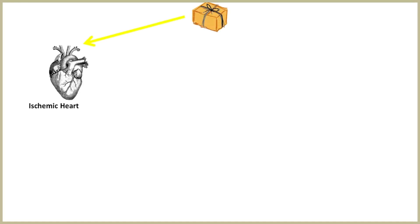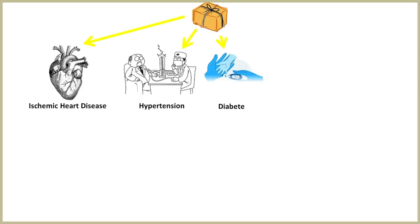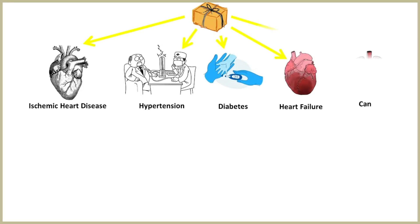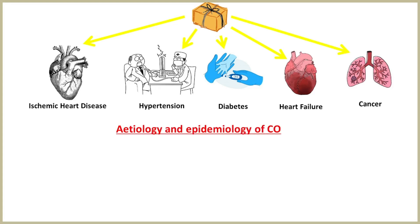COPD usually comes as a package with a number of comorbidities, such as ischemic heart disease, hypertension, diabetes, heart failure and cancer, suggesting that it may be part of a generalized systemic inflammatory process. Let's look into the etiology and epidemiology of COPD.